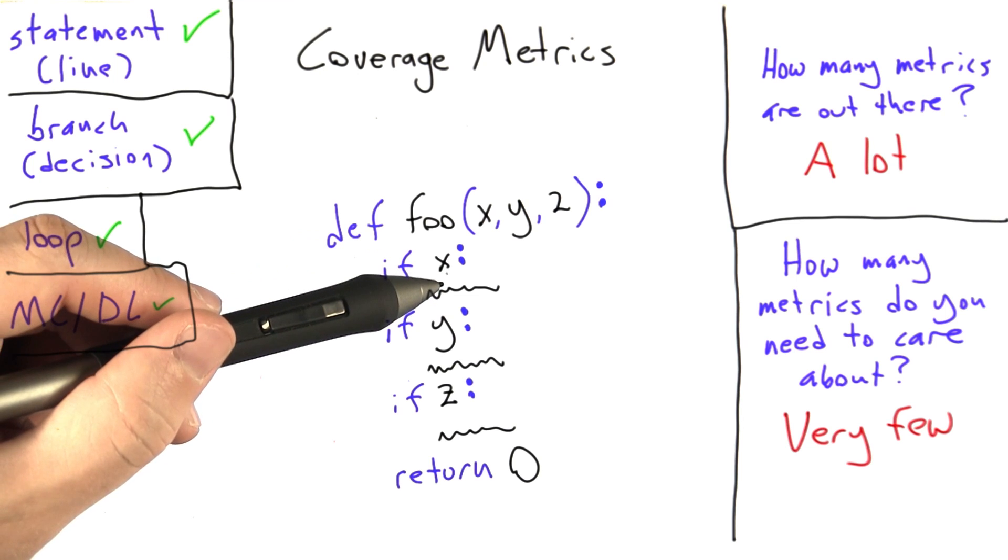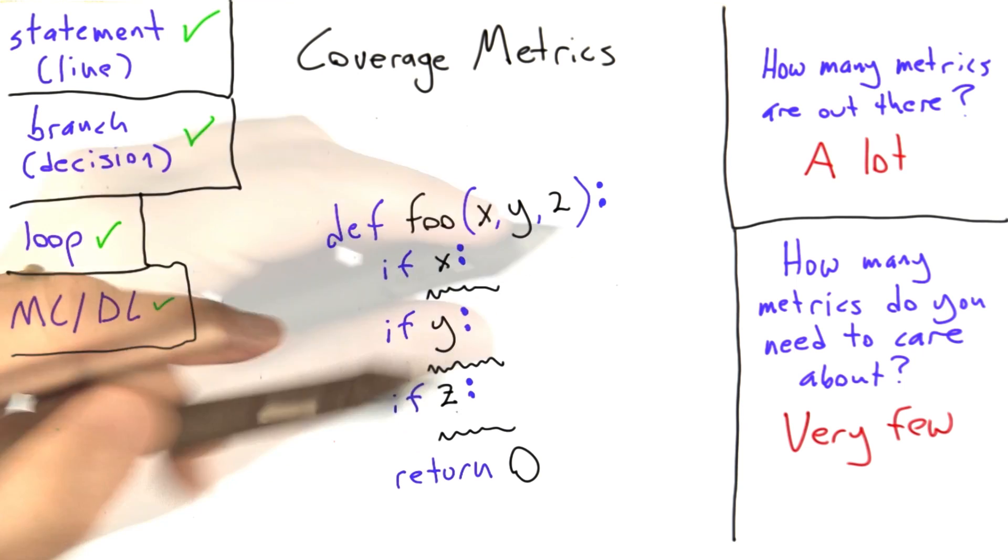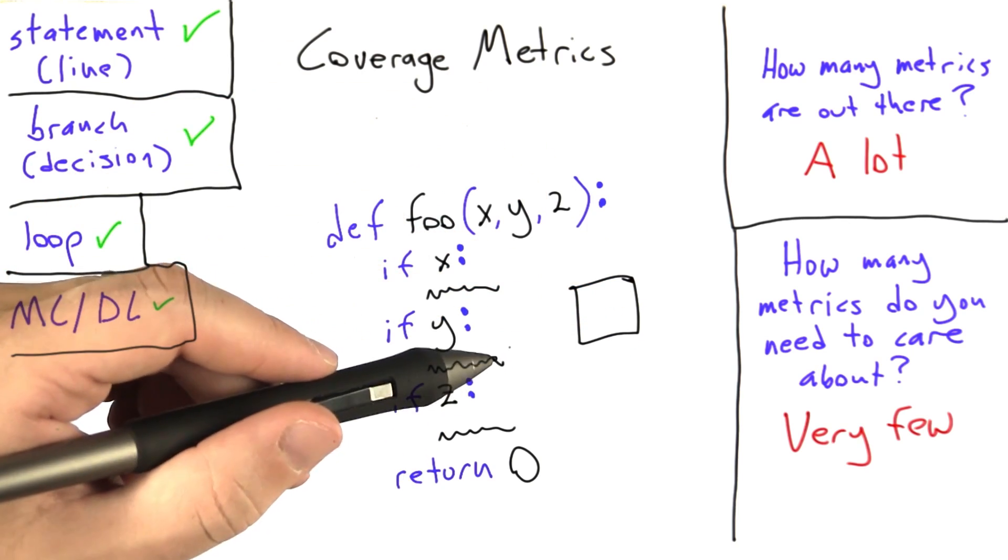So if x is true, we do something. Otherwise we do nothing here. If y is true, we do something. And if z is true, we do something. And the question I pose to you is, how many paths through this code are there? Go ahead and write your answer in the text box.